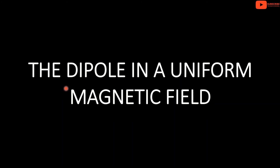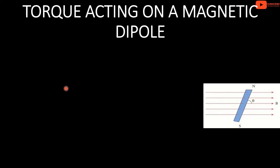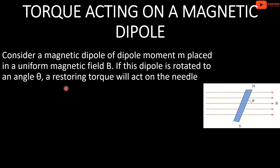Welcome to our channel. Today we are discussing the dipole in a uniform magnetic field — specifically, the torque acting on a magnetic dipole. We consider a magnetic dipole of dipole moment M placed in a uniform magnetic field B.